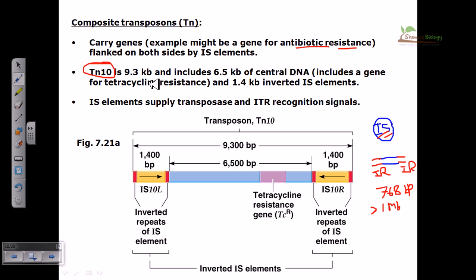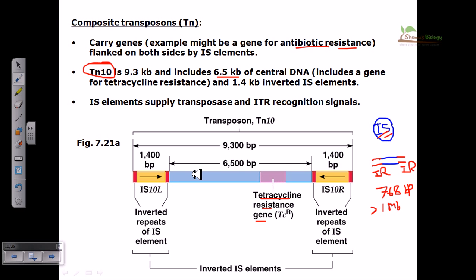We are looking at the Tn10 transposon of bacterial cells. It consists of a total 9.3 kb nucleotide sequence — pretty big. It includes a 6.5 kb central region which is the gene region, and within this 6.5 kb we have the gene for tetracycline resistance. This is a very unique factor about composite transposons: they can carry antibiotic resistance genes and transfer them from one species to another, or most commonly between members of the same species.